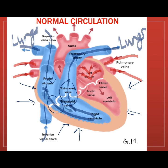From the pulmonary veins, the now oxygenated blood enters the left atrium, and as the atrium contracts, the mitral, or bicuspid, valve opens and blood is pushed to the left ventricle.